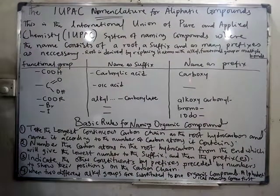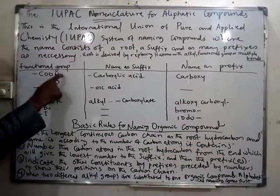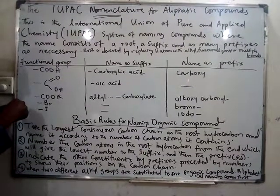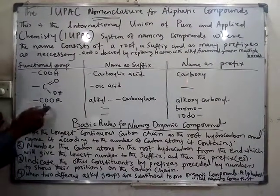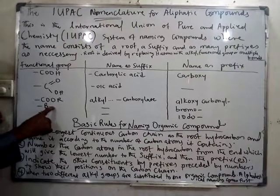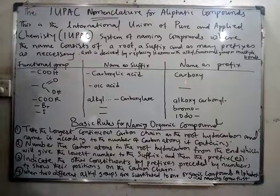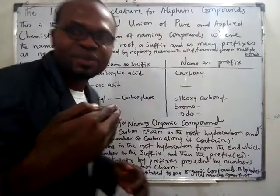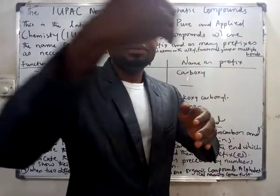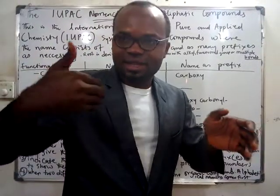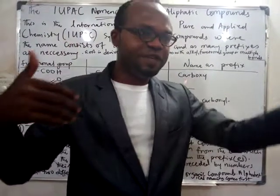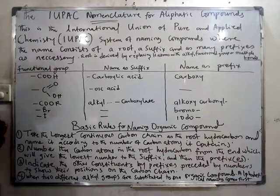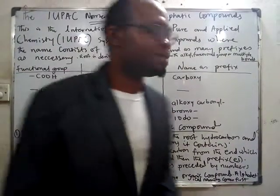This is a functional group. What functional group is this? This is a carboxylic acid functional group. This one is the alkanoic acid. Both of them are similar. Where this carboxylic group is coming as a suffix, it starts in the name. Suffix is when it comes at the end; prefix is when it comes at the beginning. So when this one is coming as a suffix, you end it with carboxylic acid. But when it's coming as the prefix, you start with carboxy.